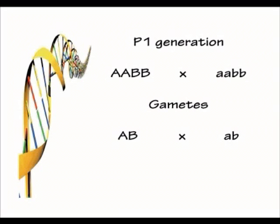A couple of definitions before we start. First, the P1 generation — that's where you take two purebred individuals and cross them with one another. On screen you can see hypothetical alleles: A's and B's. We've got a purebreeding homozygous big A, big B crossed with homozygous small a, small b. Because we're dealing with purebreds, each individual can only make one type of gamete. The big A, big A, big B, big B parent can only make a big A and big B gamete.